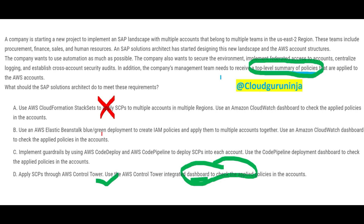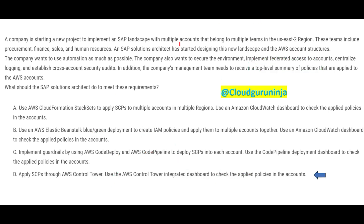Elastic Beanstalk with blue-green is a canary deployment measure — it has nothing to do with policies. CodeDeploy and CodePipeline are GitHub-style tools related to your code. For policies you need a special solution, and AWS provides Control Tower for that. AWS is testing your knowledge of AWS services — you should understand Control Tower rather than writing custom code to achieve this, at least from a certification standpoint. So Option D, Control Tower, is our answer.